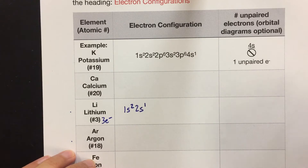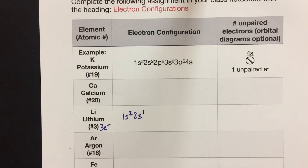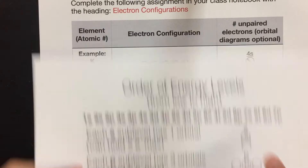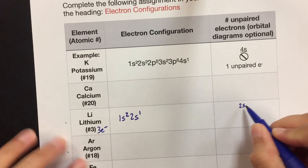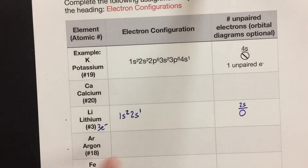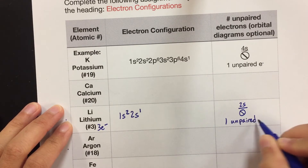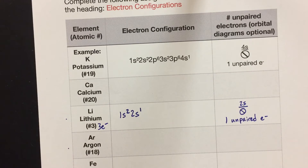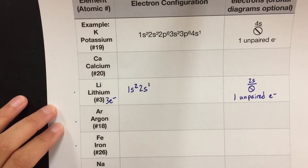That's the complete electron configuration for lithium: 1s²2s¹. Then to answer the number of unpaired electrons, the easiest way is to draw out the orbital diagram for the last piece of the electron configuration. Since we ended with the 2s sub-level, I'll label it 2s — it has just one orbital — and in that orbital I only had one electron, so I put one slash there. From that picture I can see that I have one unpaired electron. That's lithium. Let's move on to argon.